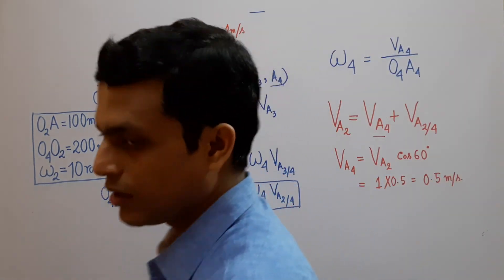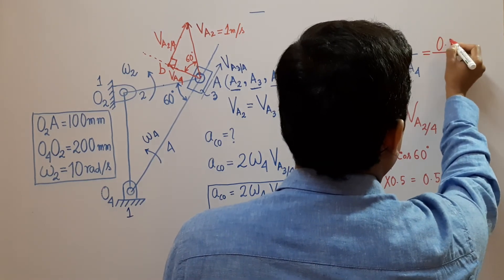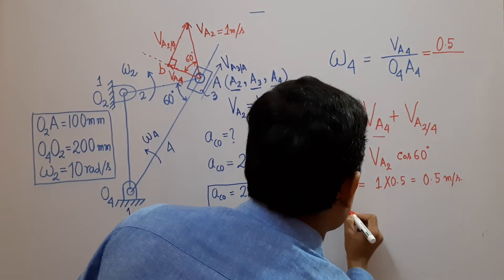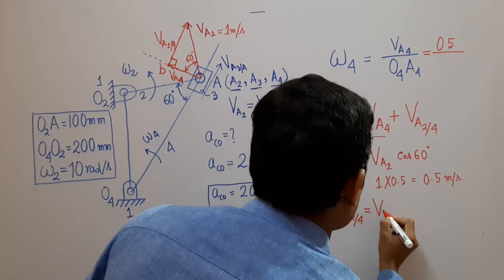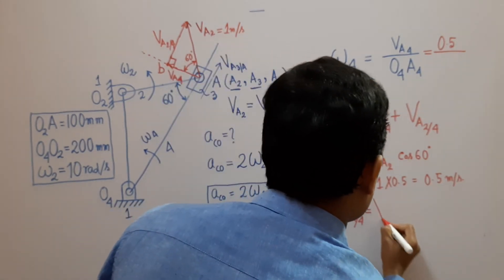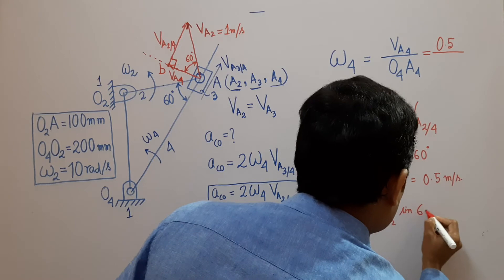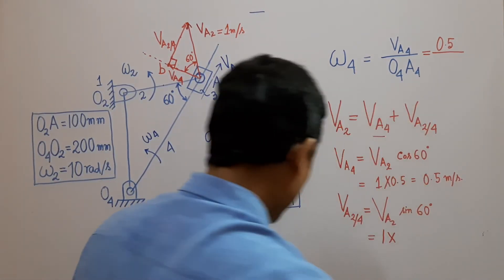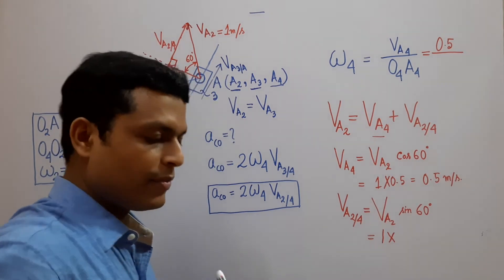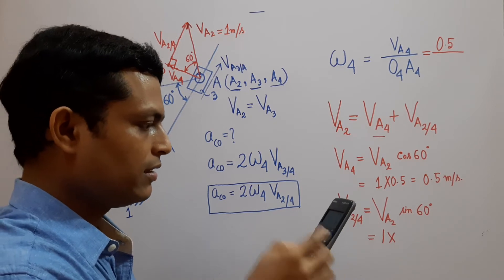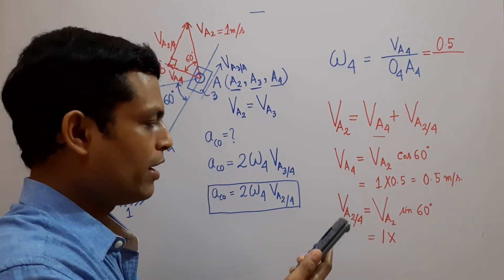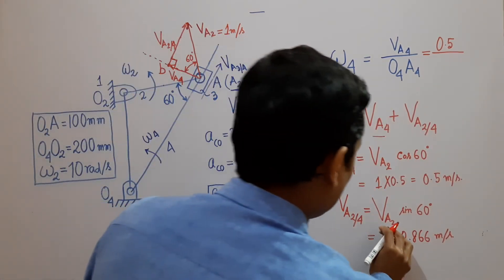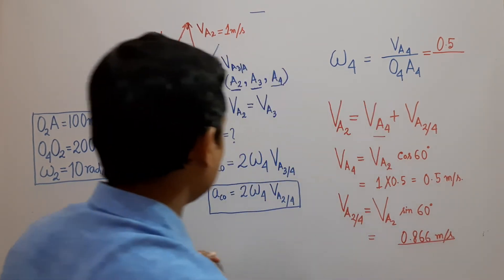VA4 is 0.5 meters per second. And VA2/4 = VA2 × sin60° = 1 × sin60°. The value of sin 60° is 0.866, so VA2/4 = 0.866 meters per second.